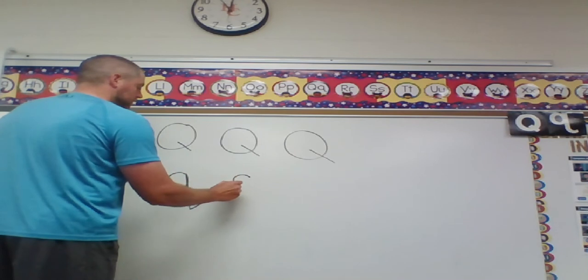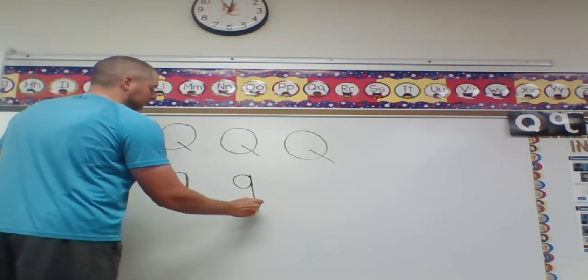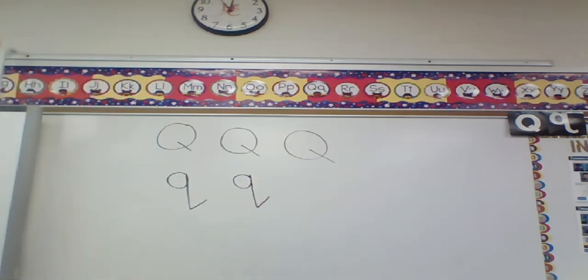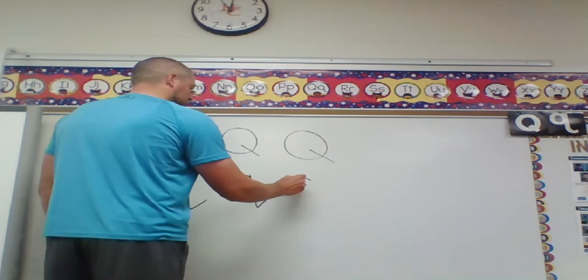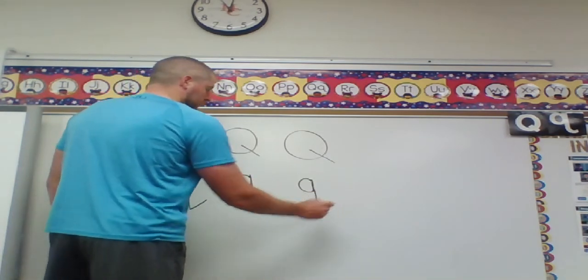Watch me make another one. I come around. I'm going to go down below the line, and then I'm going to slant up this way. Does that make sense? Watch me make one more. Just like that.